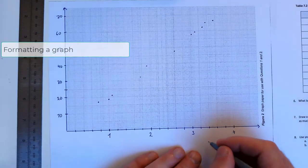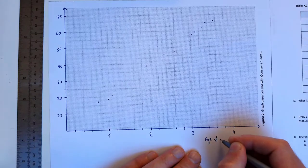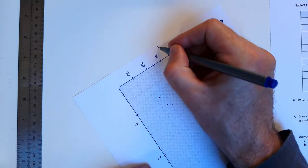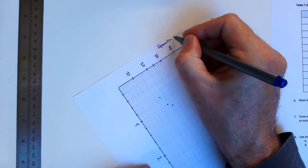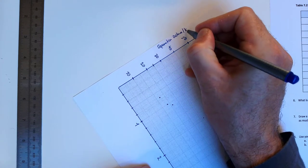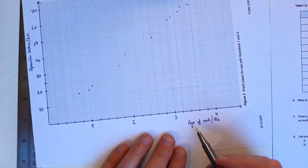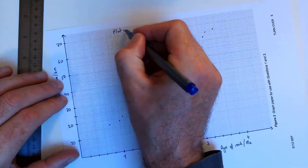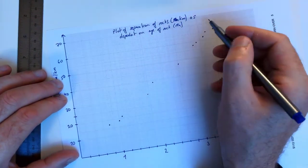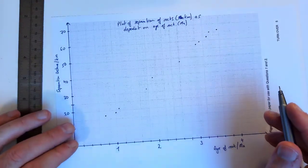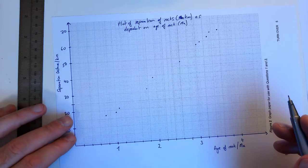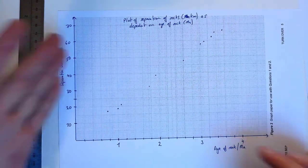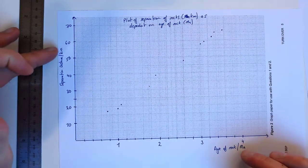I want to label my axis, so this is age of rock in million years and this is the separation distance in kilometers. Okay, so we have a label and the unit, so see that label is separated by a slash. I can call this graph something sensible, so here I've called it a plot of separation of rocks in kilometers as dependent on the age of the rock in million years. So I have, that's my basic graph. It's got axes, it's got axis labels, axis units, and a title.